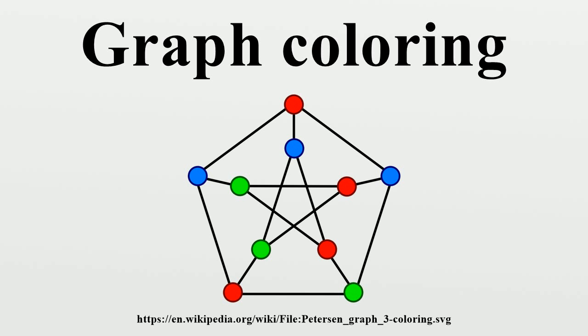This is called a vertex coloring. Similarly, an edge coloring assigns a color to each edge so that no two adjacent edges share the same color. And a face coloring of a planar graph assigns a color to each face or region so that no two faces that share a boundary have the same color.